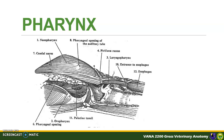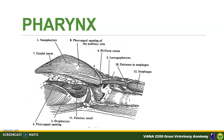Here is a schematic diagram showing the parts of the pharynx: the nasopharynx, the oropharynx, and the laryngopharynx. The piriform recess is a continuation on the floor of the oropharynx on either side of the larynx. This is the site in dogs where bones may become lodged and close the laryngeal opening of the airway.